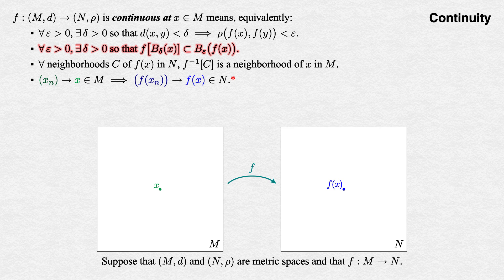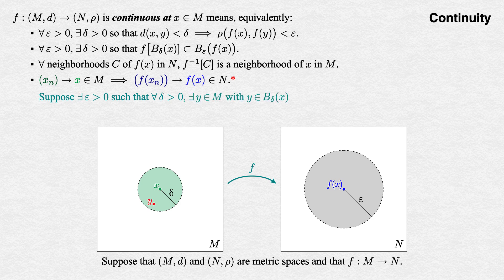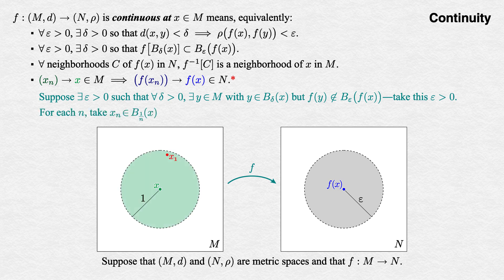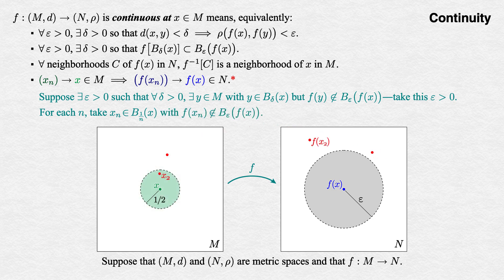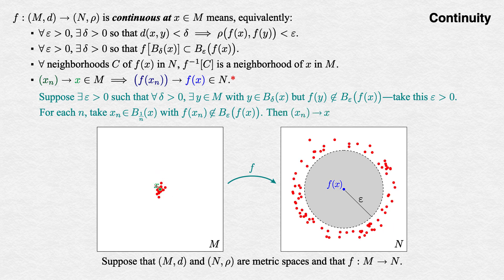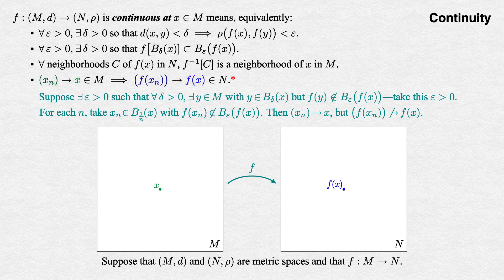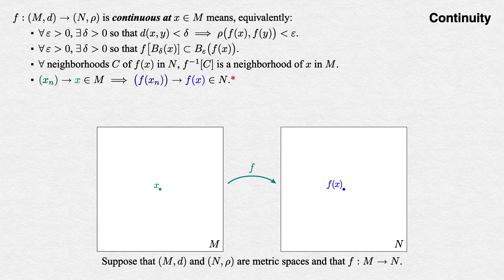In the opposite direction, suppose the open ball formulation of continuity at x fails. Then there exists some positive target radius epsilon about f(x), such that for any positive radius delta about x, some point inside that ball gets sent outside our target by f. We use this to construct a sequence: for each n, take a term x_n in the ball B_{1/n}(x) that doesn't hit our target. This sequence x_n converges to x, but the sequence f(x_n) has none of its terms inside the target ball of radius epsilon, so it cannot eventually stay inside that target, and thus f(x_n) does not converge to f(x). In a metric space, we have a logically equivalent formulation of continuity in terms of sequences.